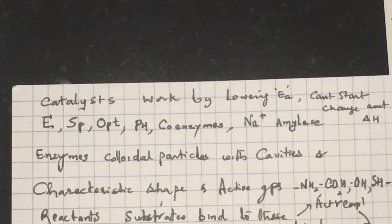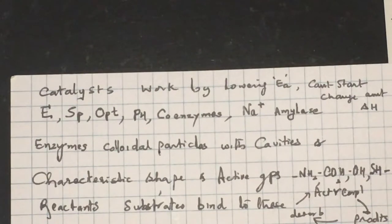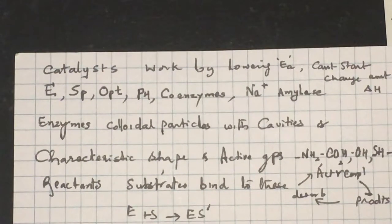To this active site the reactant molecule we call substrate binds, and then it goes to a particular activated state. From there it converts itself into a product. Once it becomes the desired product it gets dissolved and the surface is available for reactions to happen again.